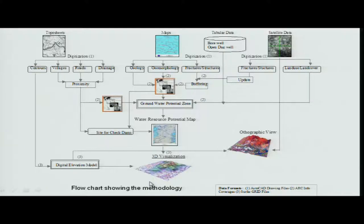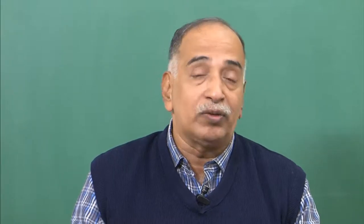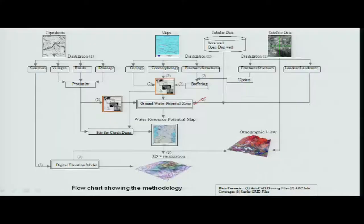To prepare groundwater potential mapping, you take all aspects about terrain and information from satellites, information from existing bore wells, and similar sources. Everything is integrated and then the groundwater potential mapping is prepared. It tells you which areas have high groundwater storage potential when compared to the rest of the areas, validated by existing bore wells and open dug wells. Terrain parameters are the key indicators for this activity.